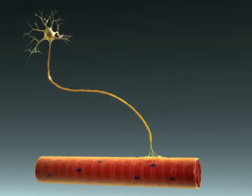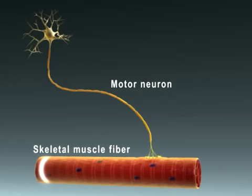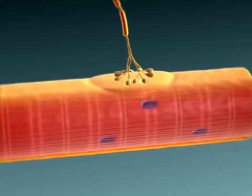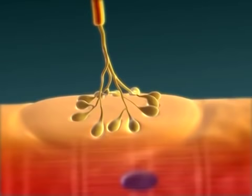An action potential propagates down a motor neuron to a skeletal muscle fiber. The site where a motor neuron excites a skeletal muscle fiber is called the neuromuscular junction.